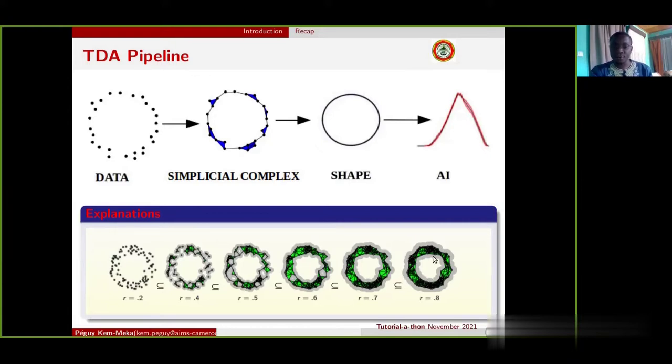Then we find the pattern that exists the most, I mean the pattern that persists for a wide range of radii. For example on this data, let's assume that this is the pattern that has existed the most. Homology reveals to us the shape of this data.